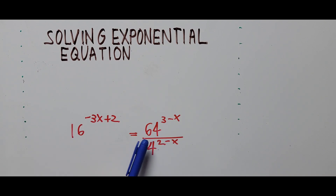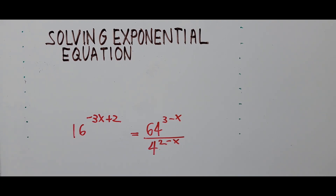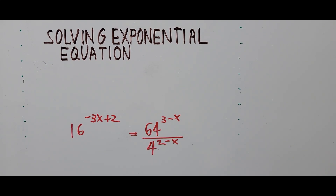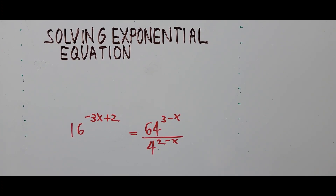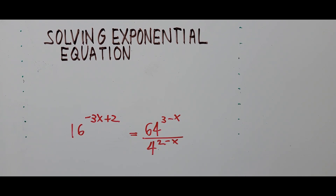On the left side the base is 16, and on the right side the bases are different: 64 and 4. Normally when solving exponential equations like this you would use the logarithm — the natural logarithm or the common logarithm. But if you can get all the bases the same, there's no need to use the logarithm.